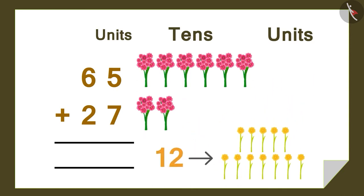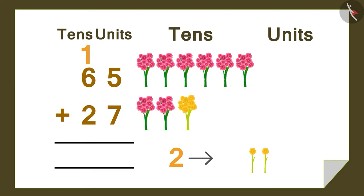There are a total of 12 single flowers. We can't write 12 in the unit's section, but we can make a bundle of 10 flowers and 2 single flowers. This means the 1 in the tens place of the number 12 can be carried over to the tens section for addition. And the 2 can be written under the unit's section just like this.